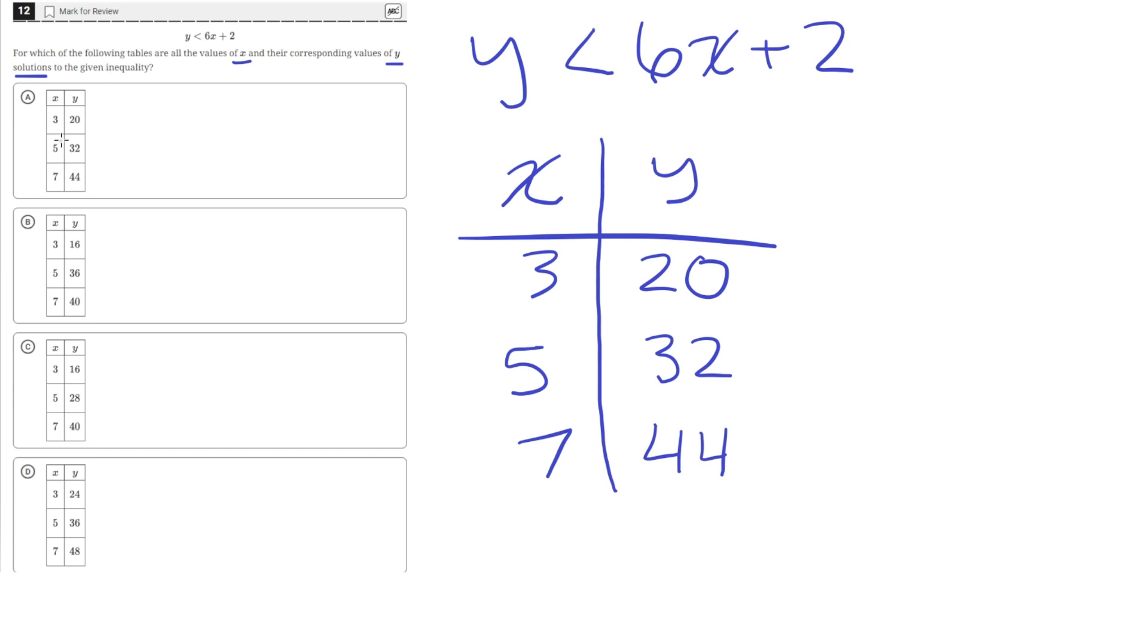Okay, so these are like the maximum values that y can be for the corresponding value of x, since y has to be less than 6x plus 2. So these are the values of 6x plus 2, and y has to be less than that.